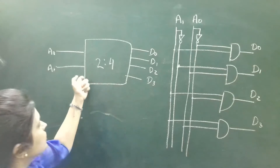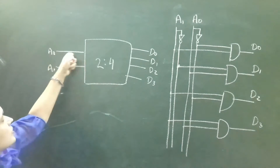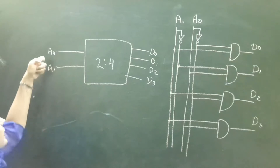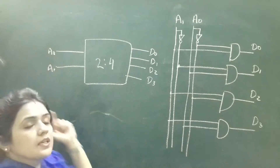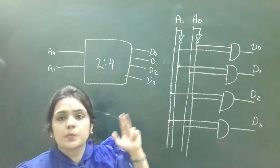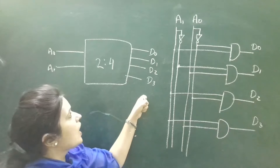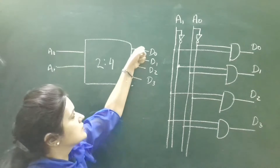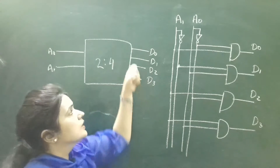This is the simple 2-to-4 line decoder. These are the two inputs A1 and A0 — the two input lines — and these are the four output lines D0, D1, D2, and D3.